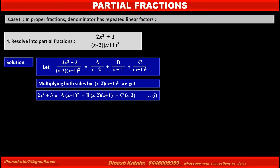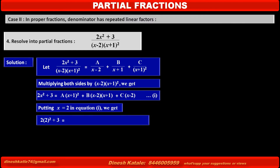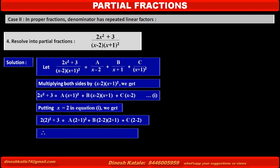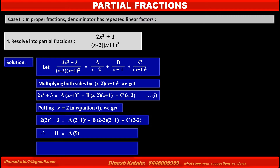First, to find the value of A, we cancel terms of B and C by making their common factor (x - 2) equal to 0. Putting x = 2 in equation 1: 2(2²) + 3 = A(2 + 1)² + B(2 - 2)(2 + 1) + C(2 - 2). Solving: 11 = A × 9. Therefore A = 11/9.